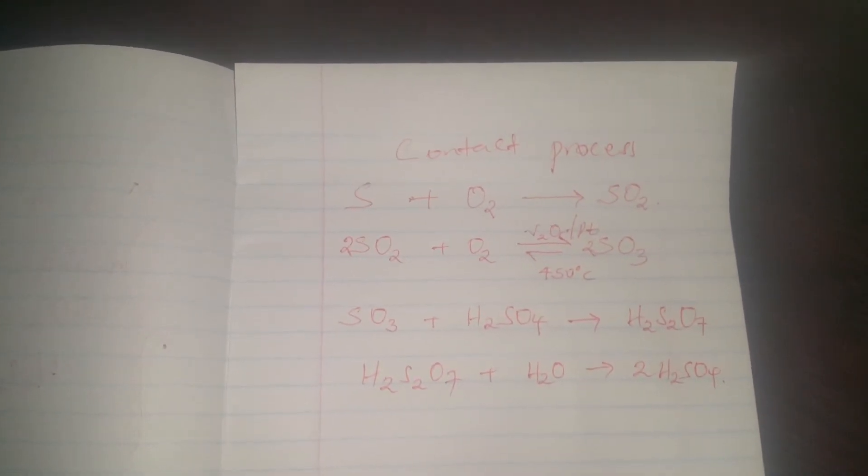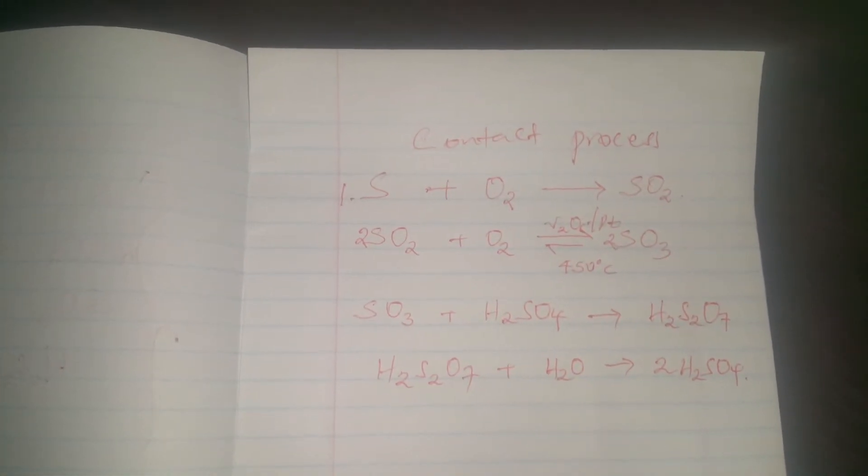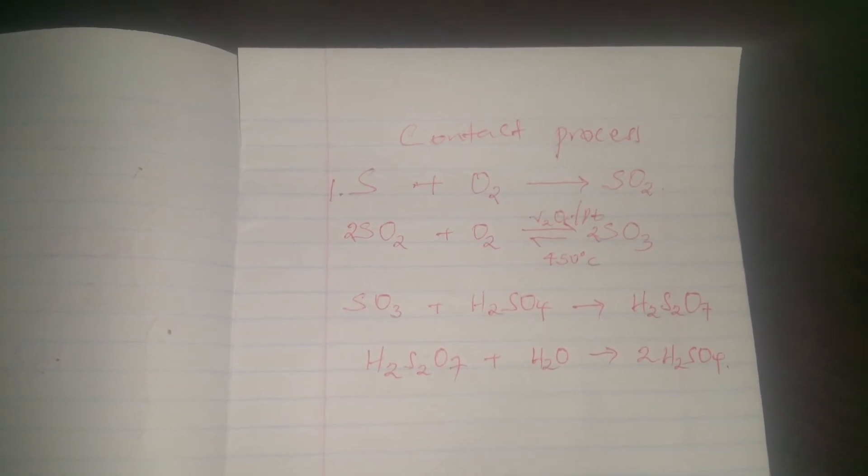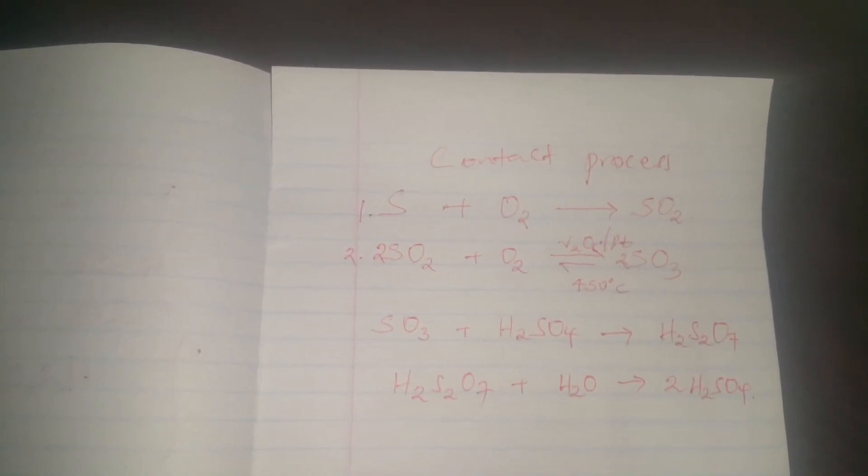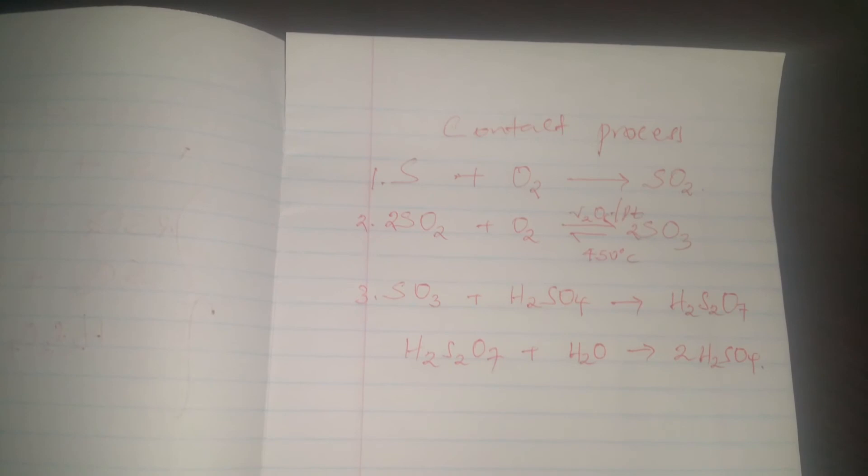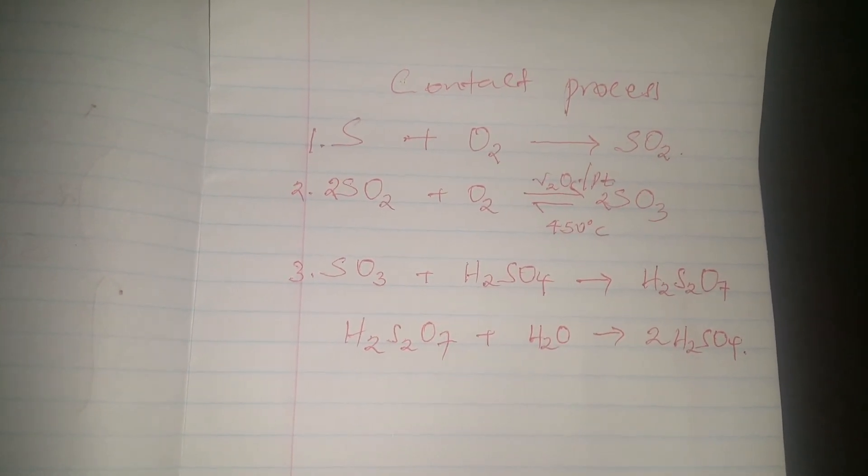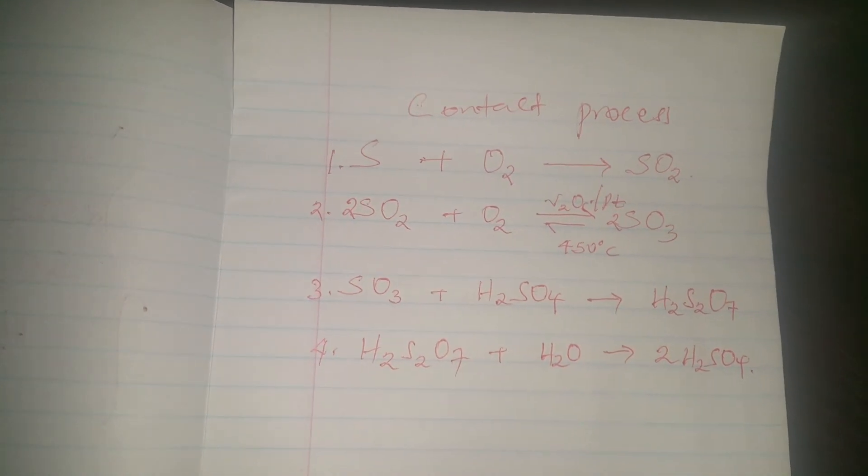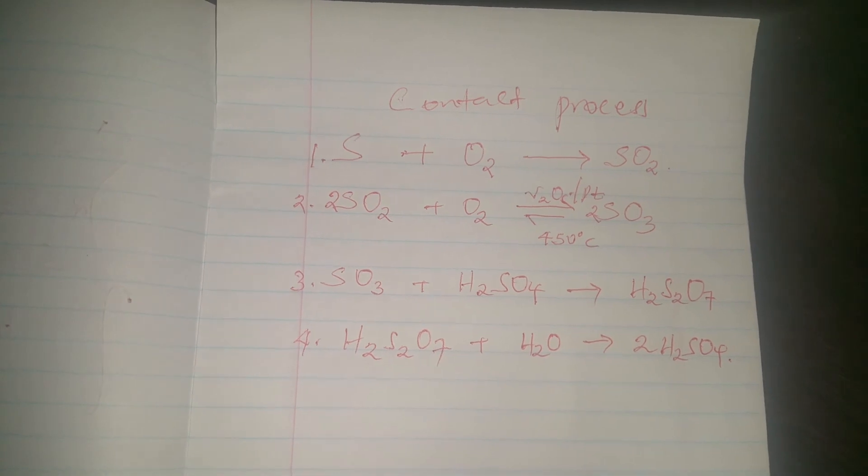So four stages are involved here. One: sulfur reacting with oxygen to form sulfur dioxide. Two: sulfur dioxide formed reacts with oxygen in the presence of a catalyst to form sulfur trioxide. Three: sulfur trioxide reacts with concentrated sulfuric acid to form oleum. And four: the oleum is dissolved in distilled water to form sulfuric acid.